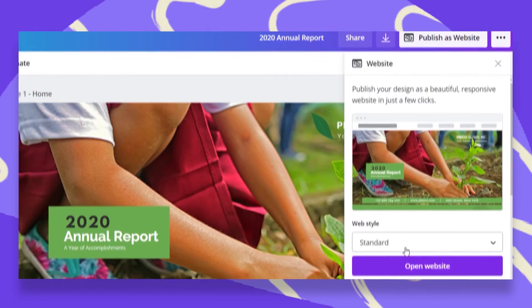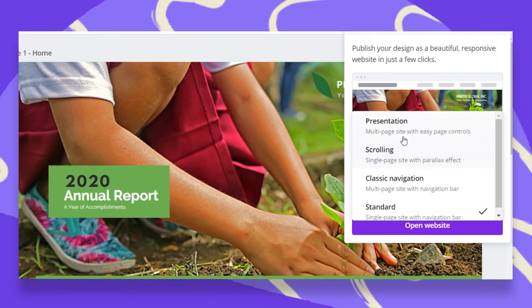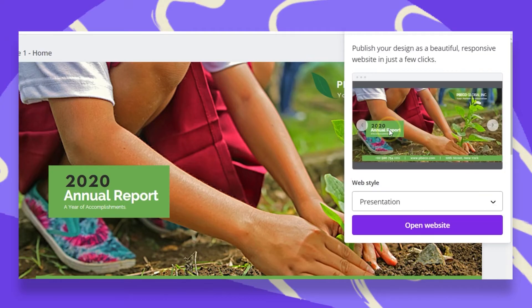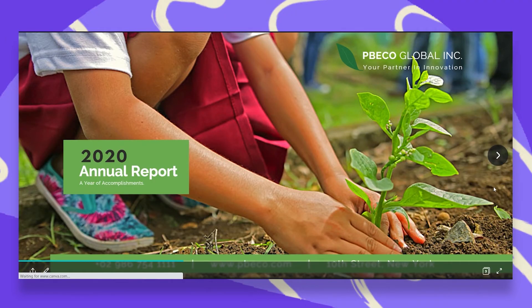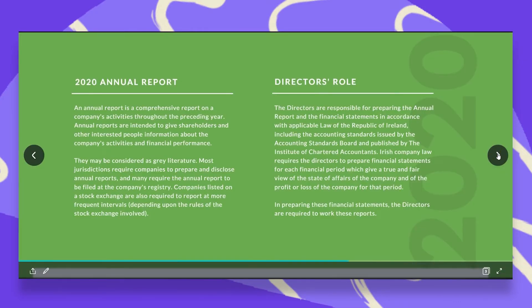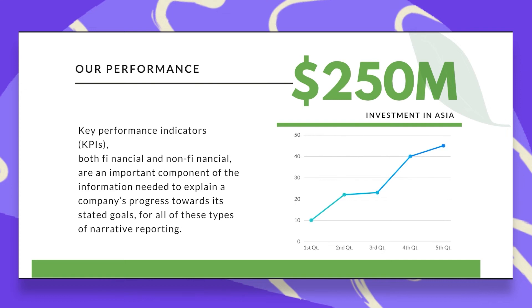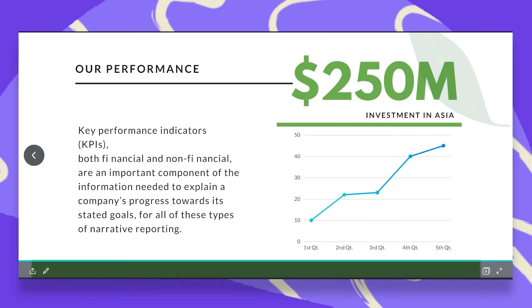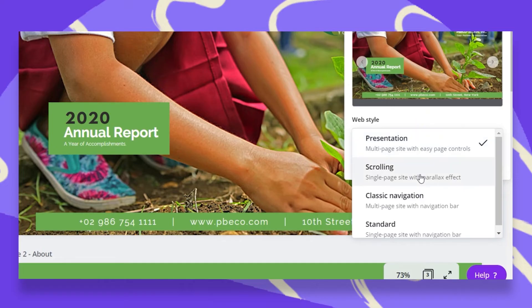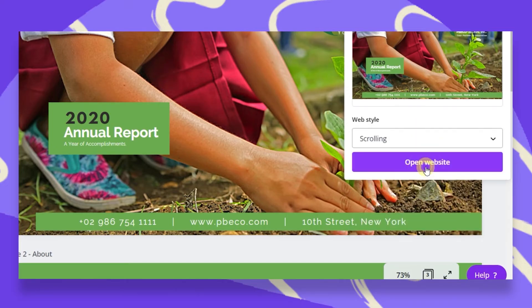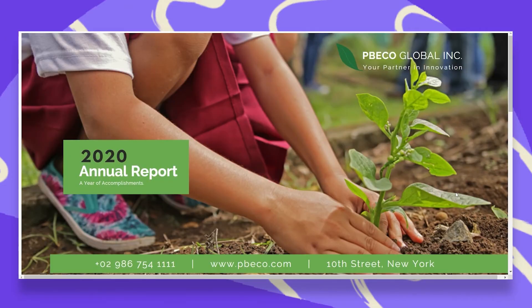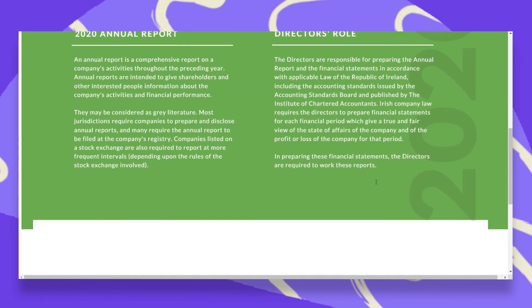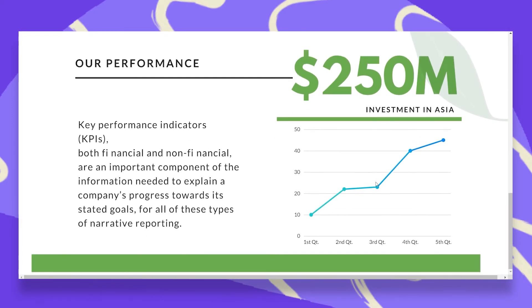We have four options of web styles. Let's click on the menu and go through each one. The first is Presentation style — click open website to see exactly what it will look like. It will look like a presentation and your audience just has to click on the arrow to navigate between pages. Very simple and very easy to use. The second option is Scrolling, which is a single page site with a parallax effect. You can scroll down and get a preview of all your pages without clicking.